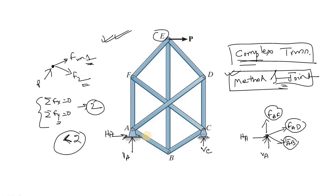If this were a simple truss, of course, this situation would not arise. But in the case of a complex truss, what you have to do is simply relocate a member in order to apply the method of joint.